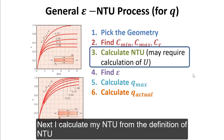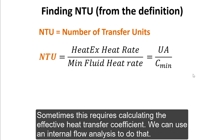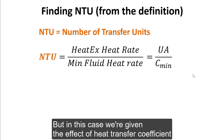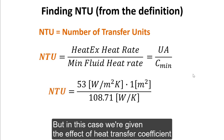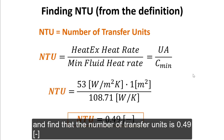Next, I calculate NTU from the definition of NTU. Sometimes this requires calculating the effective heat transfer coefficient using an internal flow analysis, but in this case we're given the effective heat transfer coefficient. So I put all these values into my calculator and find that the number of transfer units is 0.49.